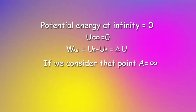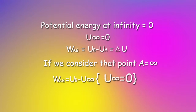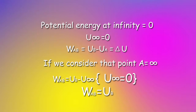If we consider point A to be at infinity, then we are considering the charged object moving from infinity to some point B. In this condition, A becomes infinite, so the formula becomes UB minus U(infinity). Since U(infinity) = 0, the formula simplifies to WAB = UB — the work done in moving the charge from infinity to point B without any acceleration.